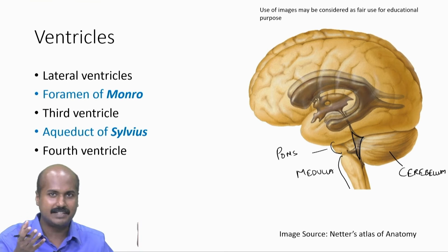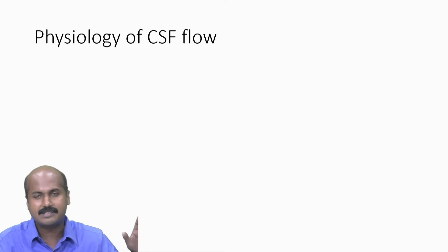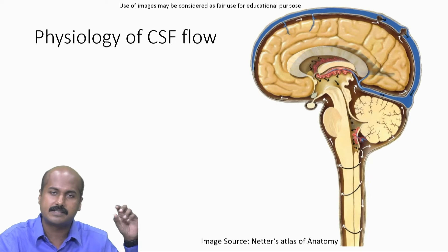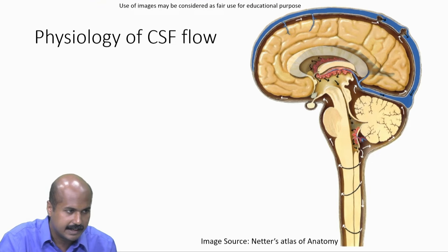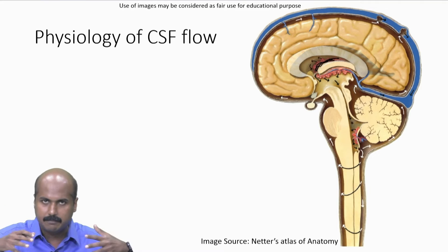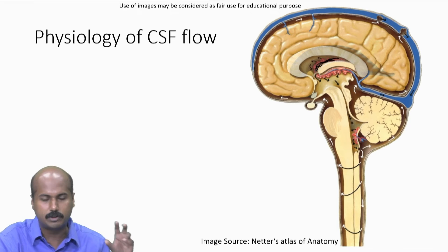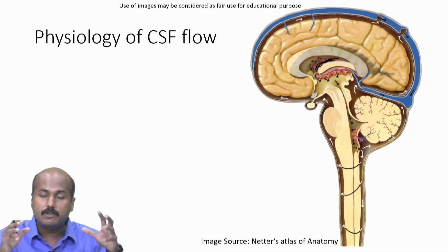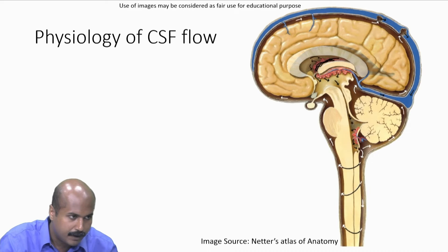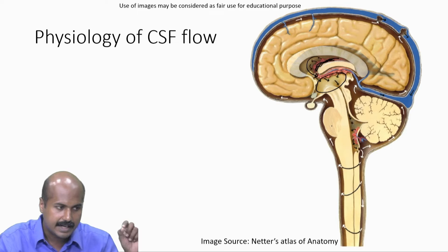Now let us look at how the ventricles contain CSF and communicate with the CSF outside the brain — this is a physiology integration topic called CSF flow. The ventricular system contains a structure called the choroid plexus, shown in red, which produces CSF from the vascular system. CSF is mainly produced by the choroid plexus in the lateral ventricle, with a minimal amount from the fourth ventricle.